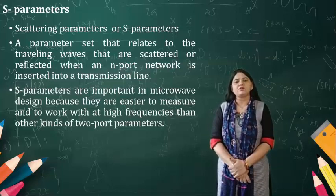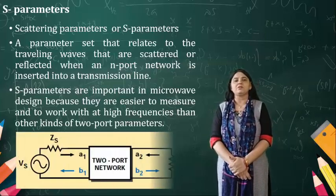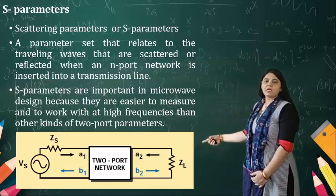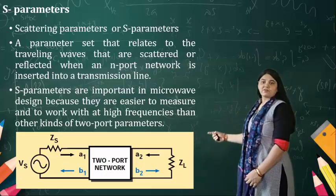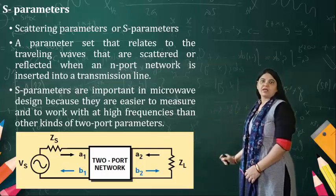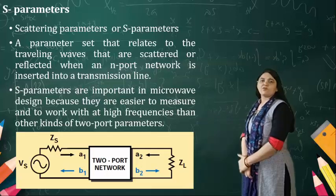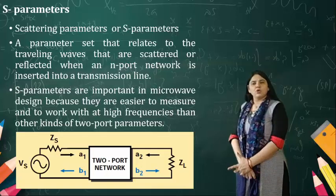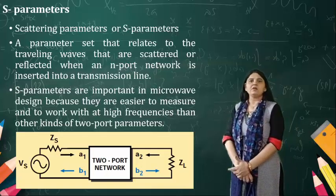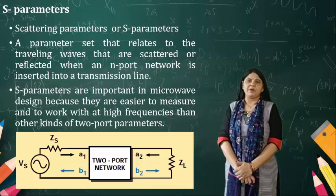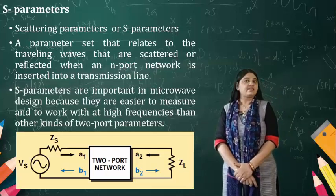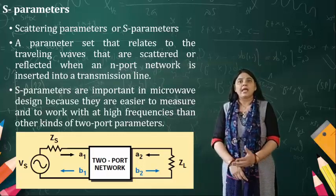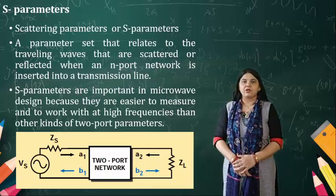The traveling wave consists of the incident wave and the reflected wave. S-parameters relate to the traveling waves that are scattered or reflected when an N-port network is inserted into the transmission line. S-parameters are important in microwave designs because they are easier to measure. At microwave frequencies, it is difficult to short circuit or open circuit devices, so measurement methods used at lower frequencies cannot help here.